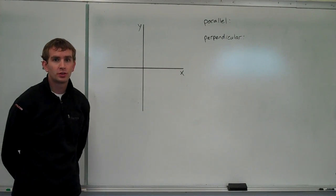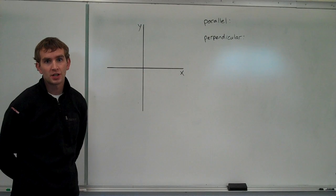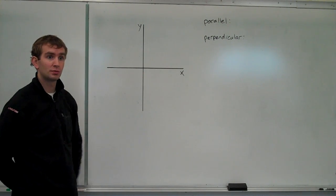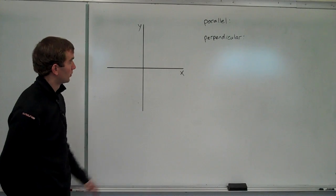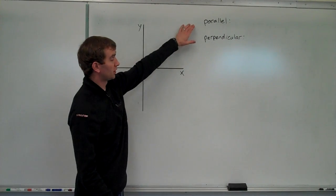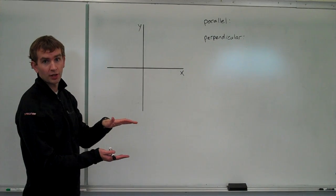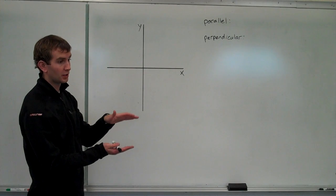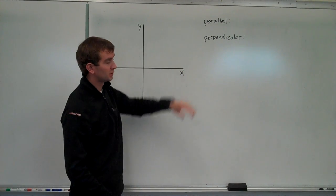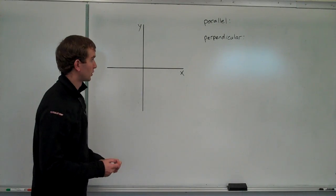Now that we've talked about general equations of lines in the coordinate plane, I want to talk about parallel and perpendicular lines in the coordinate plane and how that relates to what we've been talking about. First, we should define parallel and perpendicular. Parallel lines are two lines that would go on forever without intersecting. Perpendicular means two lines intersect at right angles.